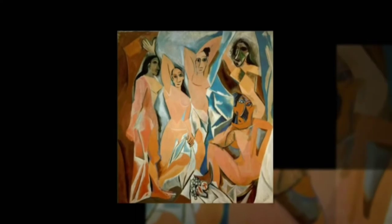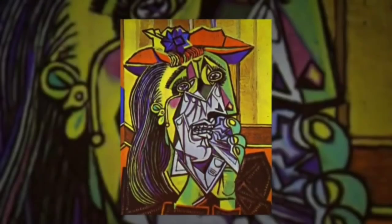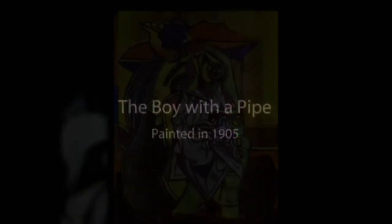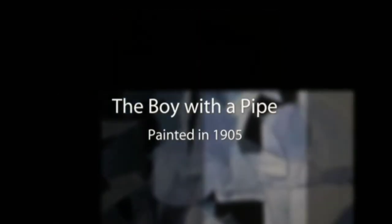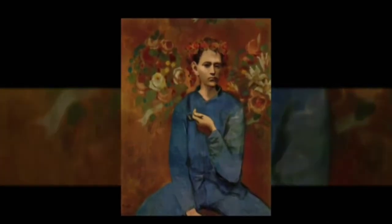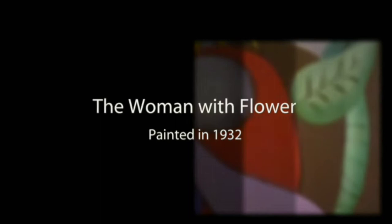The Demoiselles, which was painted in 1907. The Weeping Woman, which was painted in 1937. The Boy with a Pipe, which was painted in 1905. The Woman with Flower, which was painted in 1932.